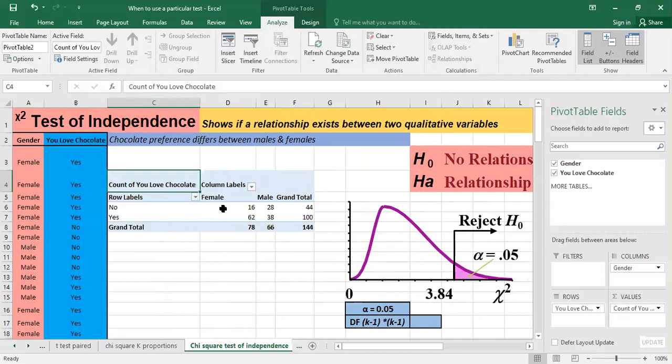These numbers we're having here, they are the observed variables, the observed values. We have to compare as you know in the chi-square, the observed to the expected. So I have to calculate the expected.